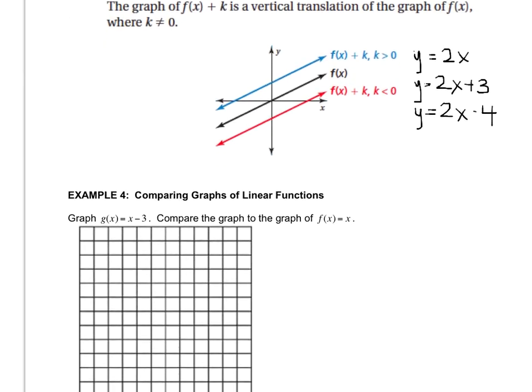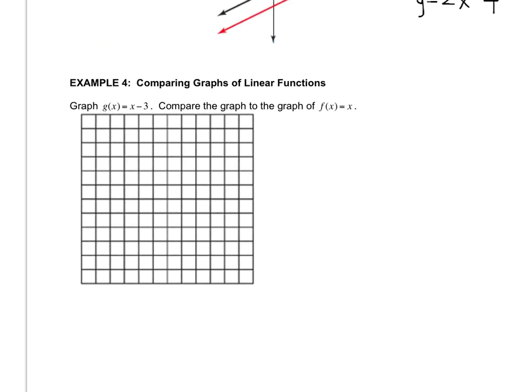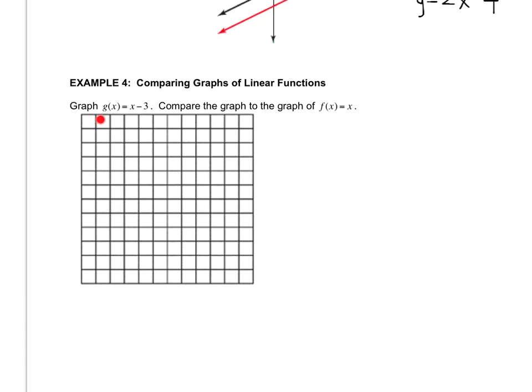So let's look at example 4. We want to graph these two functions, g of x equals x minus 3, and then compare it to f of x equals x. So remember, this is just like graphing the line y equals x minus 3. Oops, sorry, my 3 is a little crooked.